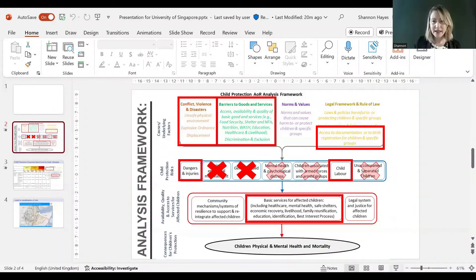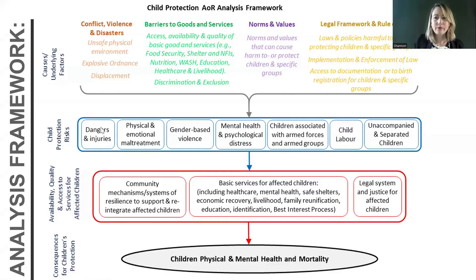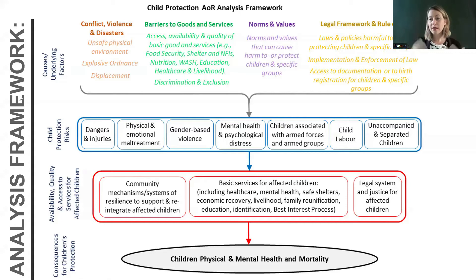We do use proxy indicators when trying to figure out where in a country we need to respond. We look at an analysis framework where the underlying factors — the situational causes — are the assumptions that lead to higher child protection risk. Things like conflict, violence, and disasters create unsafe physical environments that increase risks to children.